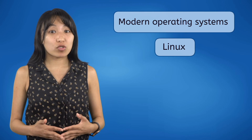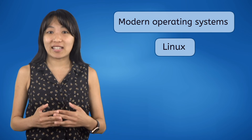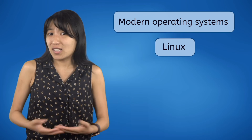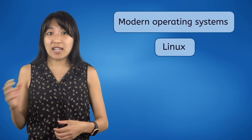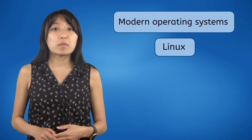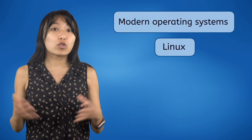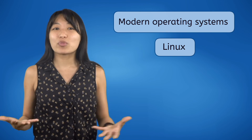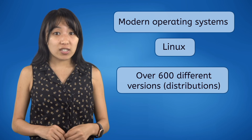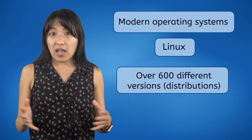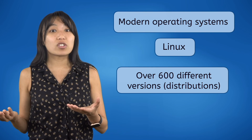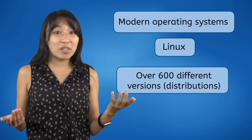Finally, some computers run an operating system called Linux. Linux is open-source software, meaning it's completely free to download, install, use, and even make changes to. Because of this, many programmers have turned Linux into a group project, all trying to improve it and add new features over time. This Linux project has splintered off over the years, and there are now hundreds of different versions of Linux known as distributions, all with different capabilities.